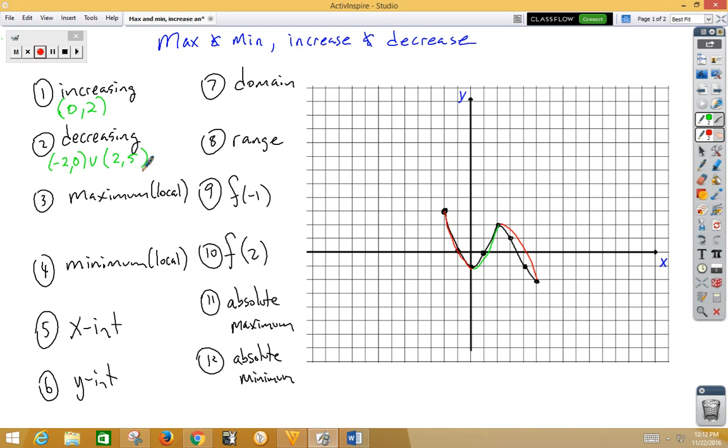Example 3 is looking for a local maximum. Local maximums and local minimums are at turning points. Notice that the graph is turning here at a maximum, so that would be at x is 2. Our local minimum is where the graph turns at a minimum point, so that would be at x is 0.